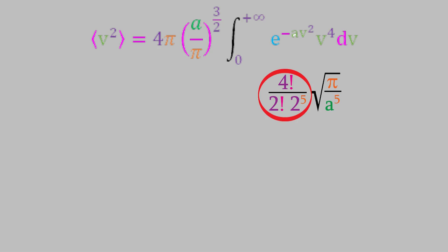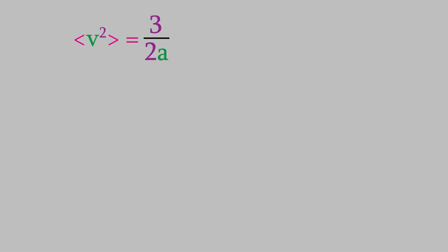We can simplify that quite a bit. First, this fraction is just equal to 3 eighths. Now, the expression we have left simplifies to the average square velocity on the left side and 3 over 2a on the right. So, we now have a very simple expression for the average square velocity.